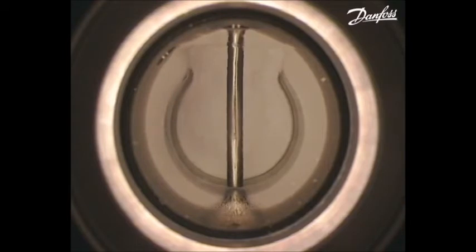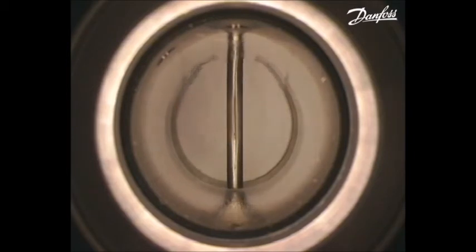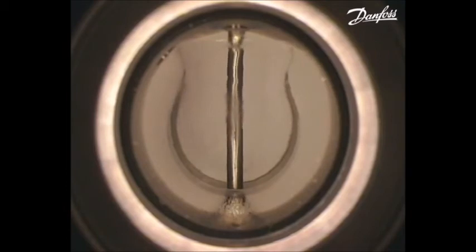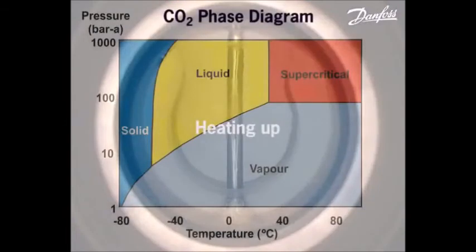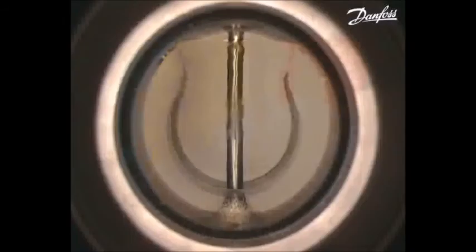CO2 now exists at a pressure of 73.6 bar absolute and a temperature of 31 degrees C. After a further small increase in temperature, all the CO2 present in the cell is now in the supercritical phase.